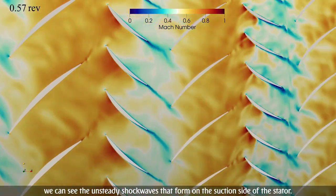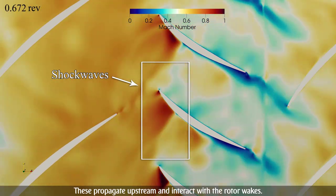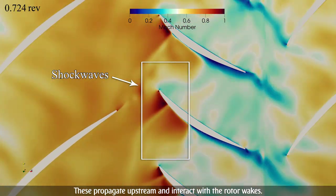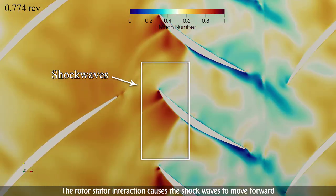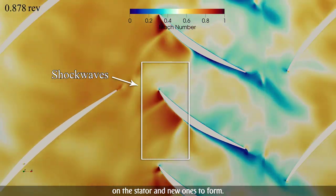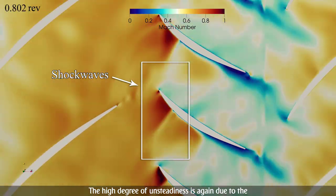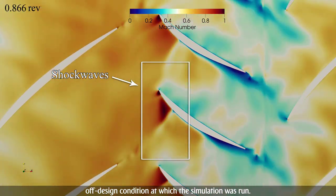Zooming into stator 3, we can see the unsteady shock waves that form on the suction side of the stator. These propagate upstream and interact with the rotor wakes. The rotor-stator interaction causes the shock waves to move forward along the stator and new ones to form. The high degree of unsteadiness is again due to the off-design condition at which the simulation was run.